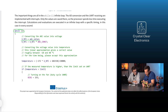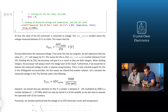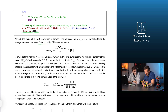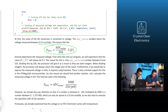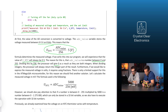At first, the value of the AD conversion is converted to voltage. The ADC_value variable stores the voltage measured between 0 and 5 volts on 8 bits. This means that UNTC equals the variable called ADC_value divided by 256, multiplied by the maximum voltage value of 5 volts. If we write this into our program, we would experience that the value of UNTC will always be 0 volts. This is because ADC_value is a number between 0 and 255. Dividing this by 256, the processor will give 0 as a result, as they are both integers. When dividing integers, the processor will always return the integer part of the result. Furthermore, if we would like to express the measured voltage in volts, it requires using fractions, and there is only limited support for this in the ATmega16A microcontroller. For this reason, we should find another solution.